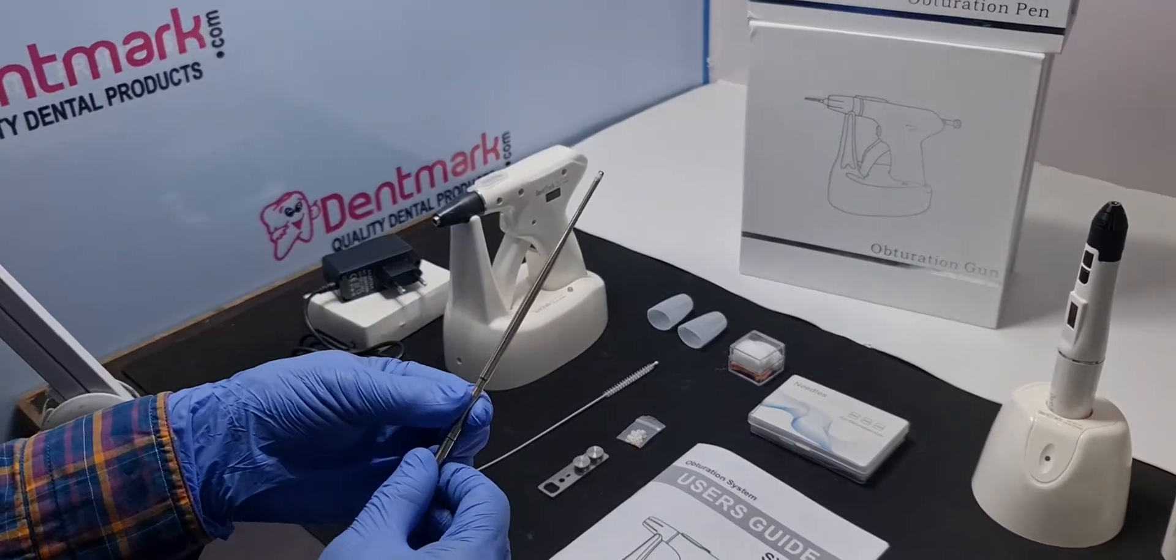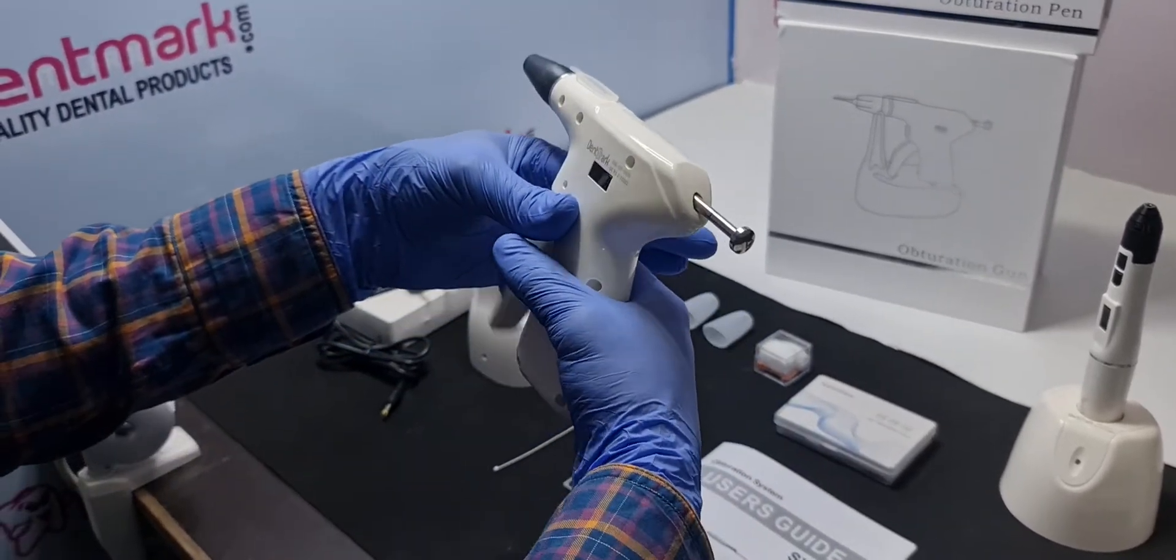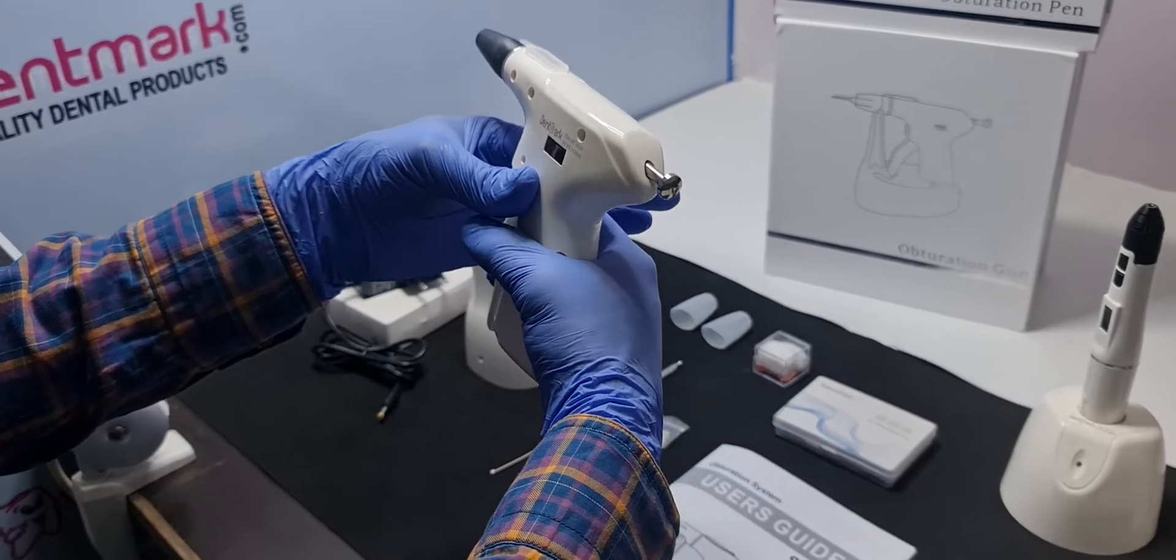This is a plunger for the GP bar to insert like this and you can press the gun accordingly.